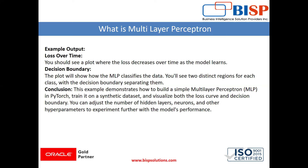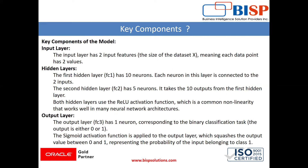We can adjust the number of hidden layers, neurons, and other hyperparameters to experiment further with the model's performance. The key components: the input layer has two input features, meaning each data point has two values. The first hidden layer has 10 neurons — each neuron is basically a perceptron — connected to the two inputs. The second hidden layer contains 5 neurons and takes 10 inputs from the first hidden layer. Both hidden layers use the ReLU activation function, which is a common non-linearity that works well in many neural network architectures.